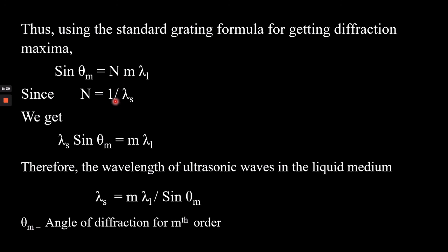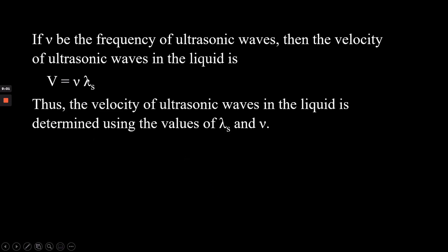Using the standard grating formula for diffraction (Bragg's law): sin(theta) = N × M × lambda, substituting N = 1/lambda_s, we get: lambda_s × sin(theta_M) = M × lambda_L. From this, the wavelength of the ultrasonic wave is: lambda_s = (M × lambda_L) / sin(theta_M). Once lambda_s is calculated, and knowing the frequency nu of the ultrasonic wave, the velocity is determined as: V = nu × lambda_s, where nu is the frequency and lambda_s is the wavelength of the ultrasonic waves.